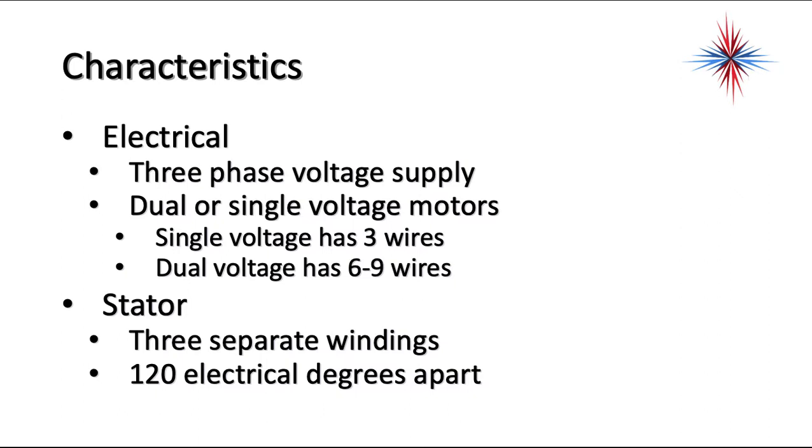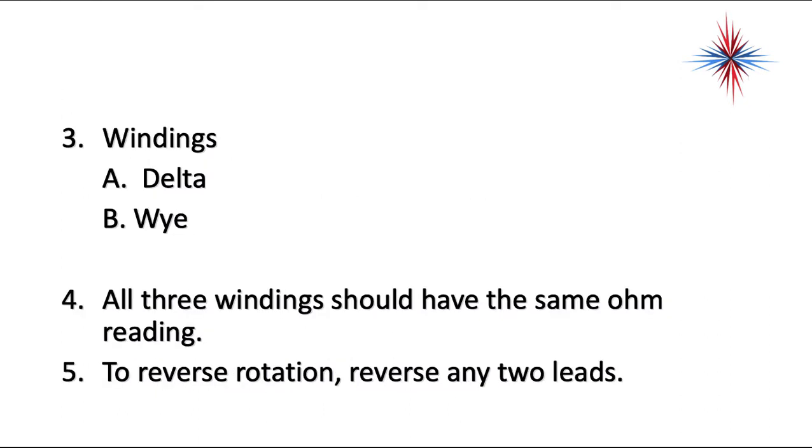So the characteristics is you have a three-phase voltage supply. You have dual or single voltage motors. A single voltage motor has three wires. A dual voltage motor has six to nine wires. The stator is three separate windings. Electrically, they're 120 degrees apart. Three times 120 is the full circle of 360. So the motor windings electrically are exactly 120 degrees apart.